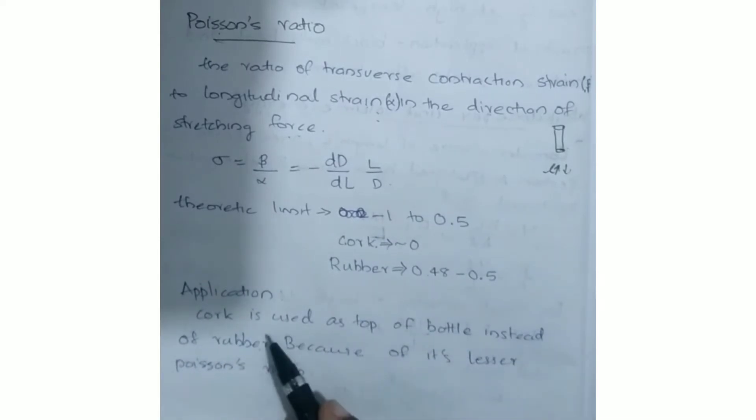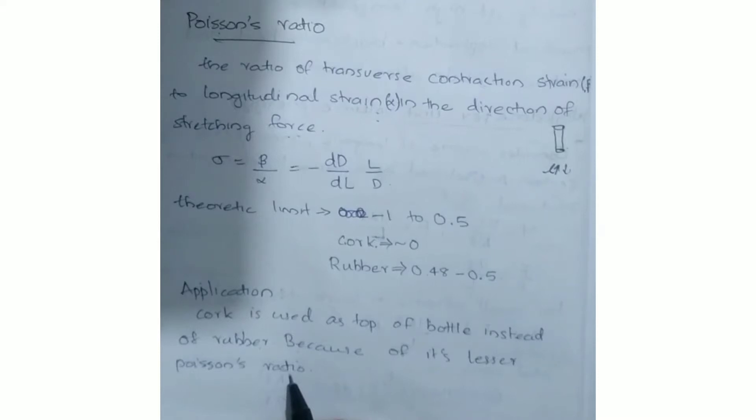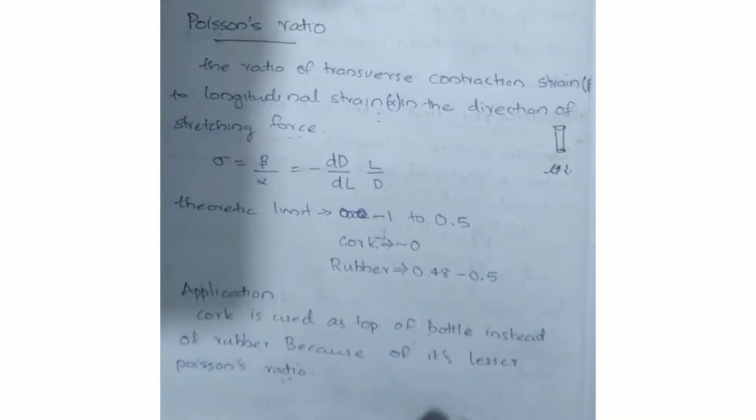This is an application. We use cork as the top of a bottle instead of rubber. Because we use cork, it has a lower Poisson's ratio. Since cork has a Poisson's ratio close to zero, it does not expand sideways when compressed, making it easy to insert and remove from a bottle.